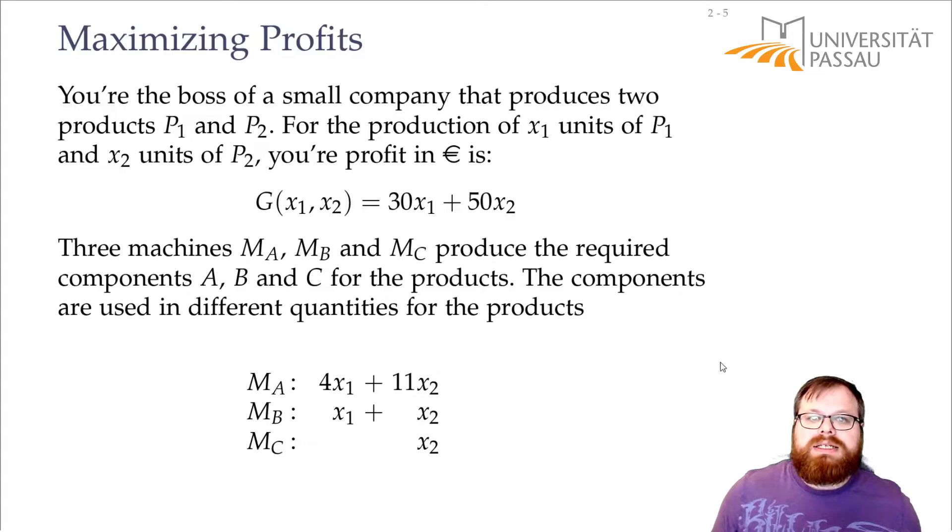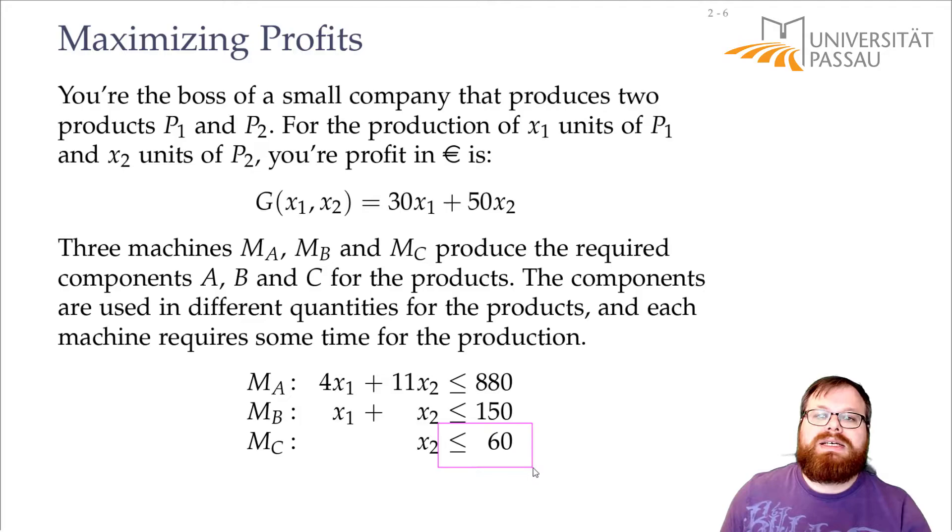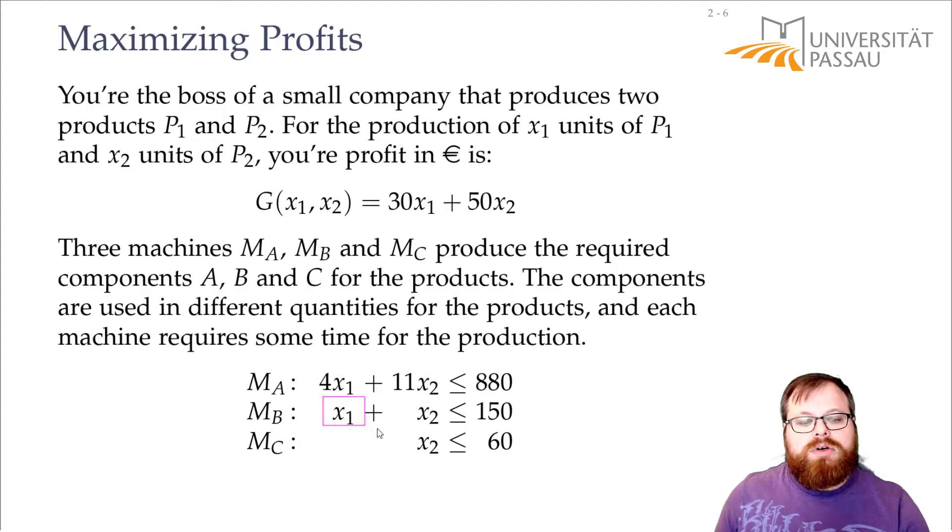Also, our machines take some time to create the component. So within one day, for example, we might be able to create 60 types of component C and 880 types of component A. For a mouse, we need one type of component C. And for the keyboard and mouse both, we need one type of component B. That means we can create at most 60 mice and at most 150 keyboard plus mice together.